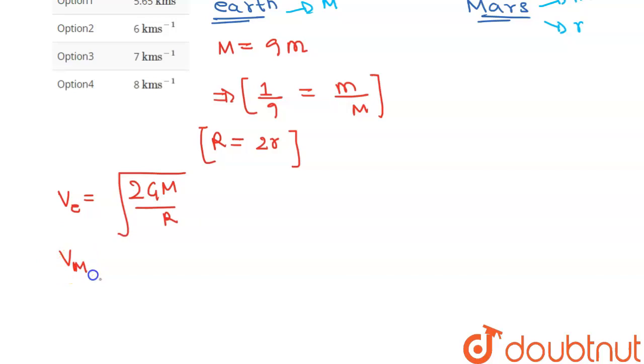or escape velocity for Mars over escape velocity of earth can be written as small m over capital M into capital R over small r, because 2 and g are constant they will simply get cancelled out.